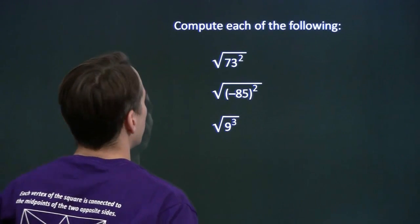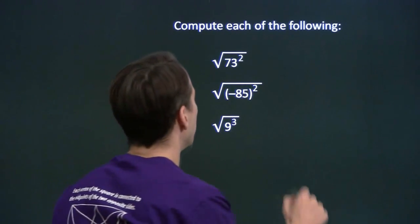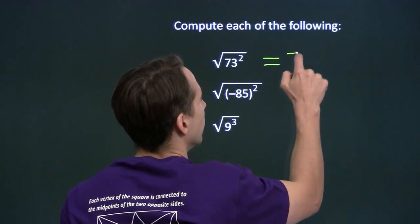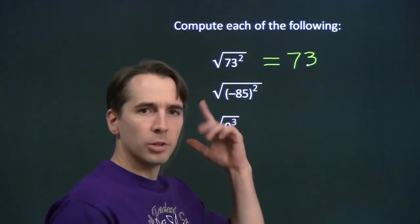All right, let's try a few more. We already know how to do this one. You square 73 to get 73 squared.